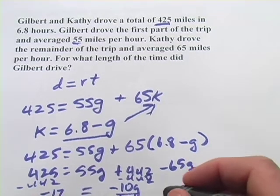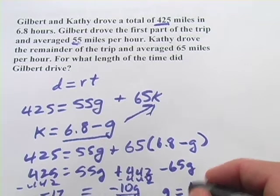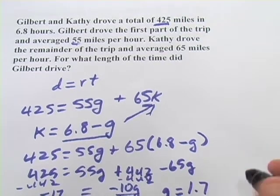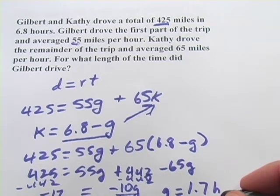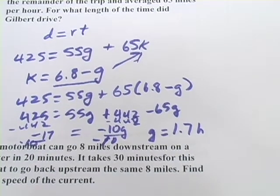And you would get the time Gilbert drove equals 1.7. And we're in hours here.